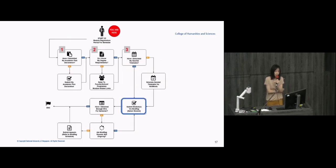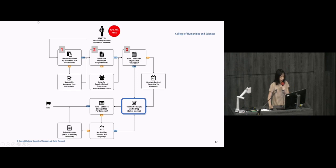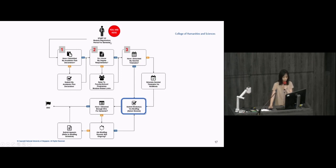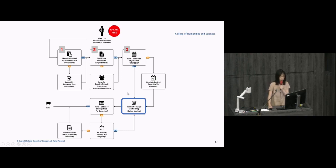There is a step-by-step guide prepared by the Registrar's Office on how to use the Academic Plan Declaration system — it's on MyEduRec. Academic Plan Declaration is the first step of the ModRec exercise. The second step is to know your degree requirements — what modules you need to take to graduate. The third step is to simulate your timetable before going on to ModRec.